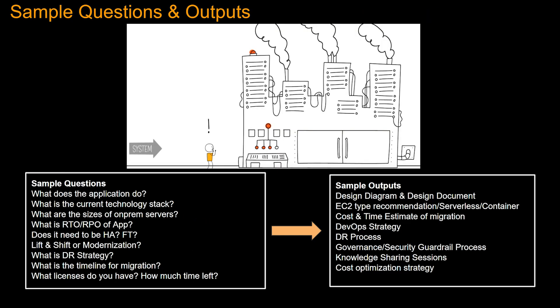Now, this slide is pretty technical, but I wanted to give you an accurate idea based on my actual experience — I did not Google this. Here are some sample questions and outputs from the architect. Some sample questions are: what does the application do, current technology stack, sizes of on-prem servers, etc. Sample outputs include design diagrams and design documents, should we use EC2, serverless, or containers, what is the cost and timeline, DevOps strategy, etc.